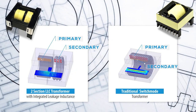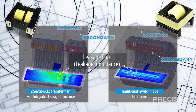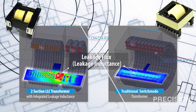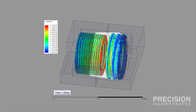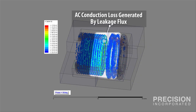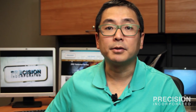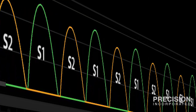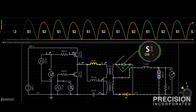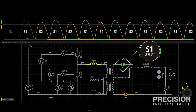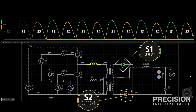Leakage flux is generated by the virtue of generating leakage inductance in the transformer. These leakage flux, if not managed properly, can generate more high-frequency AC losses in your transformer than anticipated. We use ANSYS Maxwell 3D to evaluate and minimize the AC losses generated by the leakage flux. Additionally, ANSYS Maxwell 3D is used to generate and balance leakage inductance. Imbalanced leakage inductance can result in asymmetrical switching waveforms, which can result in more switching losses.